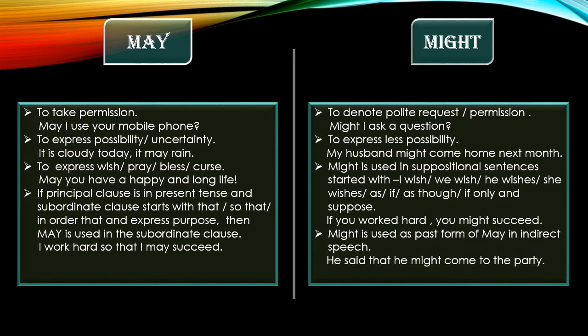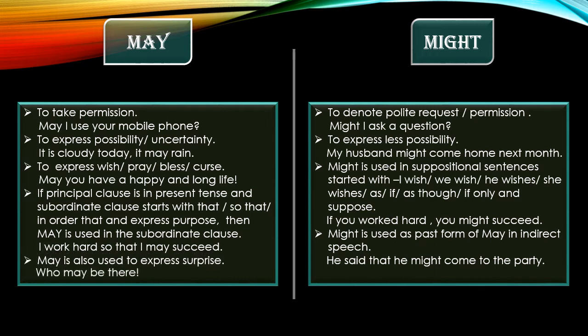For example in indirect speech: 'He said that he might come to the party.' The words 'said' and 'that' indicate the sentence is in indirect form. May is also used to express surprise — for example: 'Who may be there?' These were all the uses of may and might.